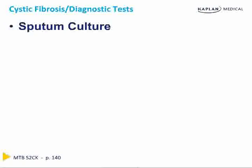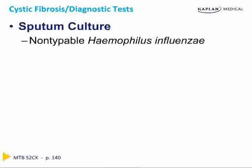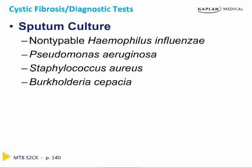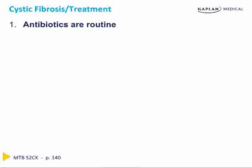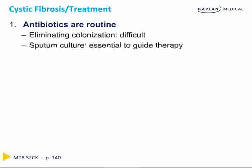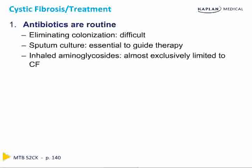Once you've made the diagnosis of CF, it is critically important to obtain sputum cultures, particularly during a bad flare. Non-typable H. flu, Pseudomonas, Staph aureus, and Burkholderia cepacia are the most common organisms and the ones most prone to developing antibiotic resistance. Repeated sputum cultures are important to ensure the antibiotics you are administering are effective. Treatment mostly consists of antibiotics — you must try to eliminate colonization, though this is very difficult, in particular with Burkholderia cepacia. Inhaled aminoglycosides such as tobramycin are usually given to CF patients and are rarely used outside of this setting.